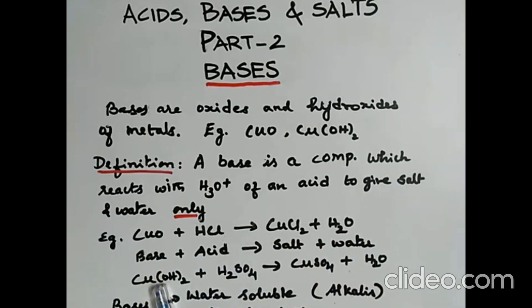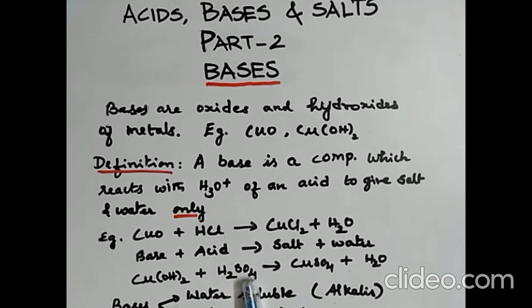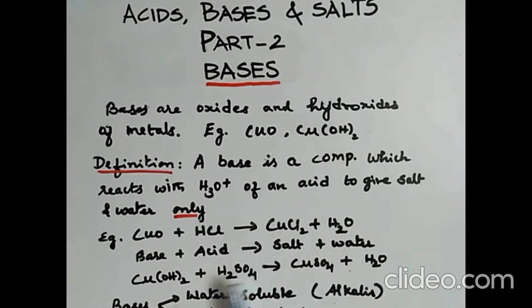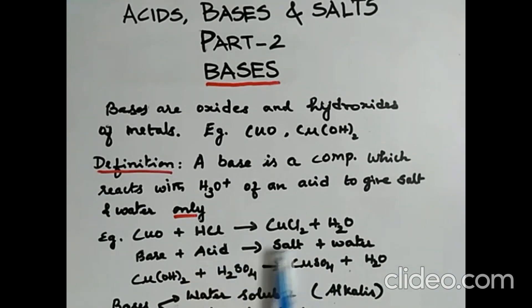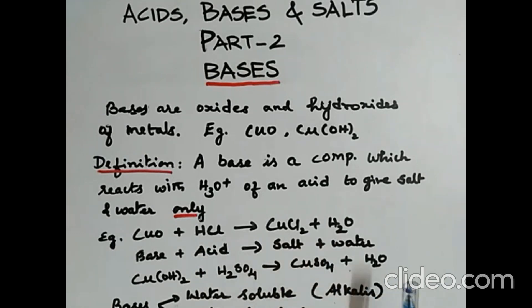Copper 2 hydroxide combines with sulfuric acid — another example taken for an acid — to give copper sulfate and water. So you can see here, in both cases, you find only salt and water being formed.